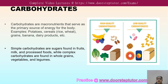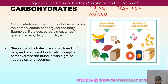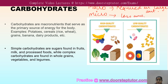When we talk about carbohydrates, these are macronutrients. Let me introduce the terms macro and micro. Macro refers to something required in large amounts by the body, while micro refers to something required in smaller amounts by the body.